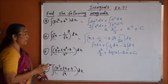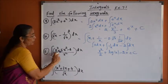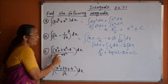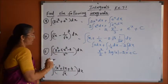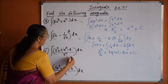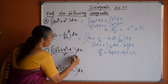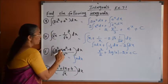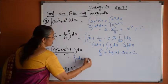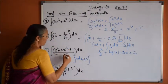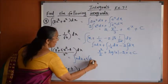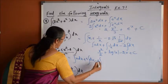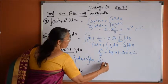Problem number 11: integration of (x³ + 5x² - 4) divided by x². Divide each term by x²: x³/x² gives x, plus 5x²/x² which gives 5, minus 4 times integration of 1/x² dx.